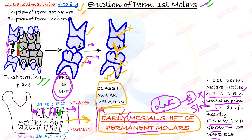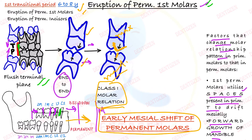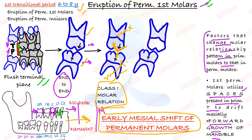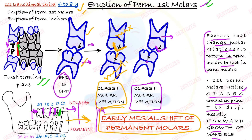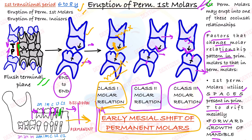That is ideal — class 1 molar relationship is established from flush terminal plane. But if the two factors are not proper, other types of molar relationships can develop. In class 2 molar relationship, the maxillary tooth is much forwardly placed — its mesial buccal cusp is not in line with the mesial buccal groove of the mandible but is forwardly placed. In class 3 molar relationship, the opposite occurs — the mandibular molar is much forwardly placed, so the mesial buccal cusp of the maxillary is much behind the mesial buccal groove of the mandible.